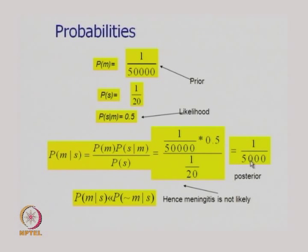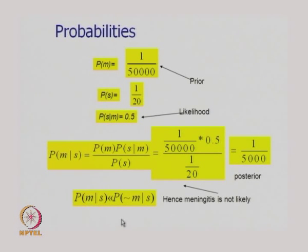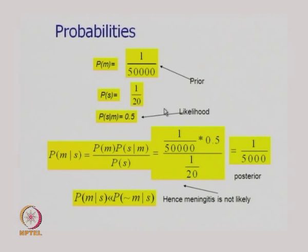From this it is easy to deduce that P(M|S) is much, much less than P(¬M|S). Comparing these two probabilities, we find that the probability of meningitis given stiff neck is much smaller — 1/5,000 — and hence meningitis is not likely. We should very carefully understand this example, as there are many important things shown by it.